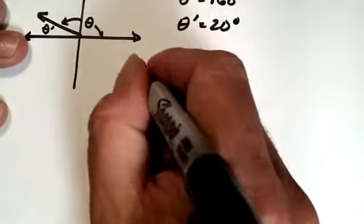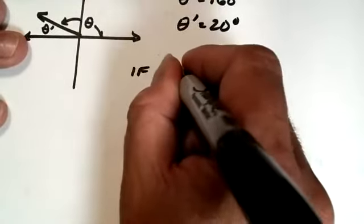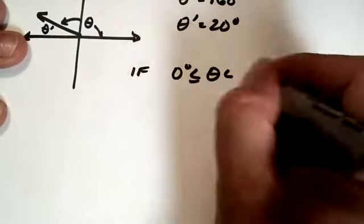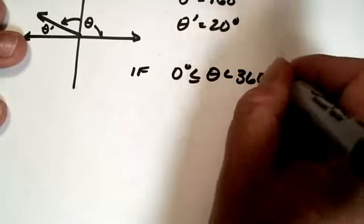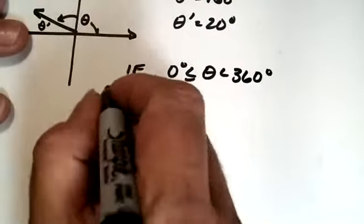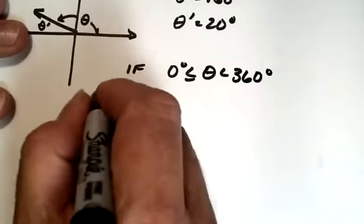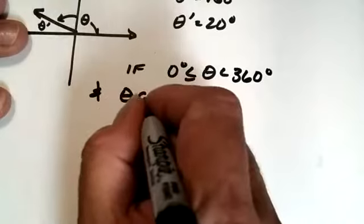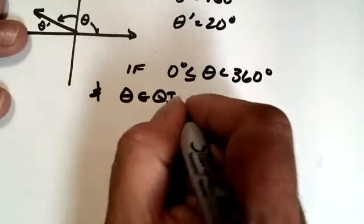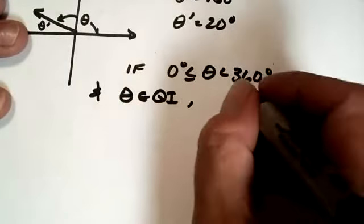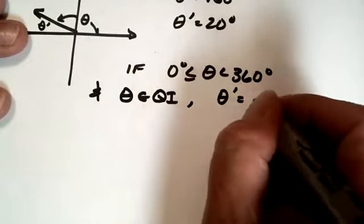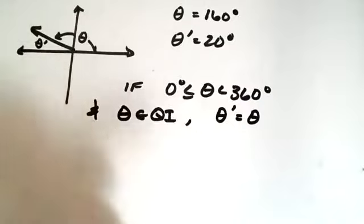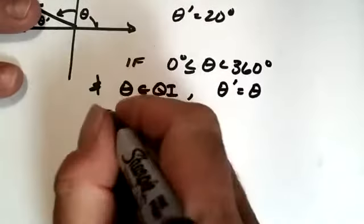But let's just assume for a second that theta is a positive angle between zero and 360 degrees. So how do we find the reference angle in quadrant one through four? So if zero, theta, 360, and theta in Q1, then theta prime is equal to theta, right? So this is just kind of, this is not telling us any new information.